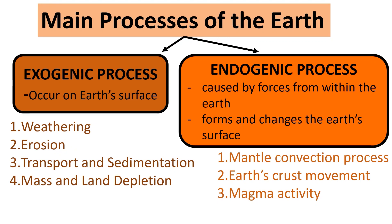What are Earth's processes that cause changes on Earth's surface, and how do these changes take place? Earth's surface is formed by two processes: exogenic process and endogenic process. Let's learn about each in more detail.